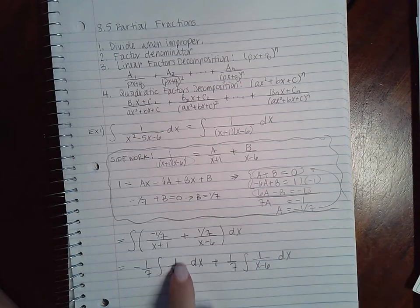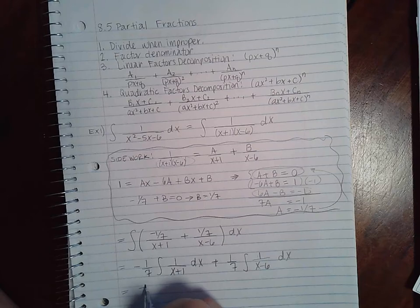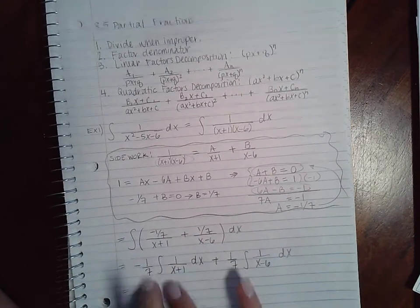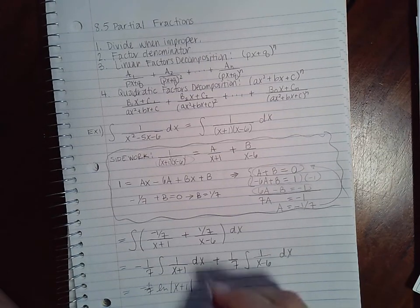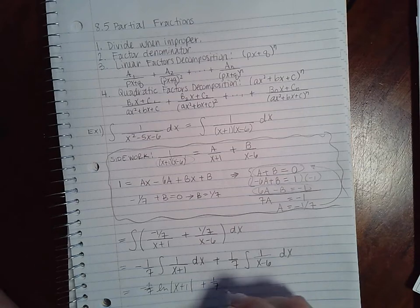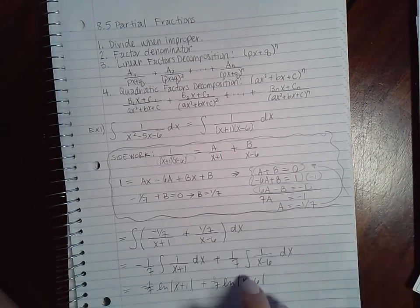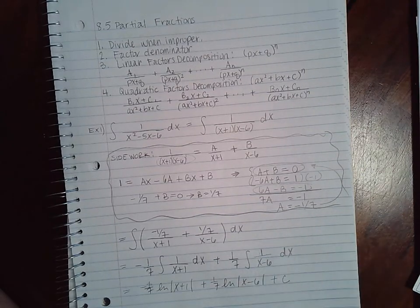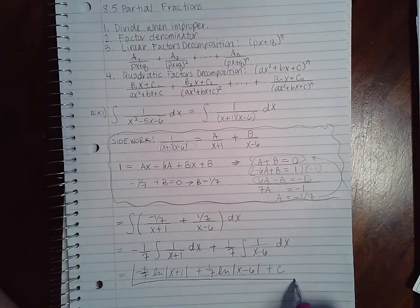You do have the derivative over the original and the derivative over the original, which means you're going to have negative one seventh ln of x plus one plus one seventh ln of x minus six. This is an indefinite integral, so you do have your plus c attached to it. So this is your final answer.